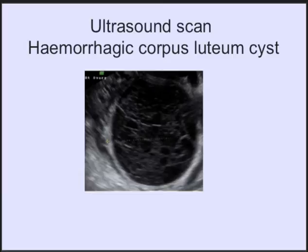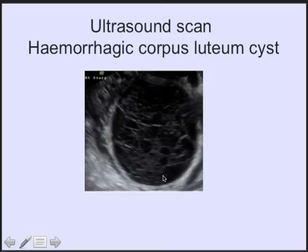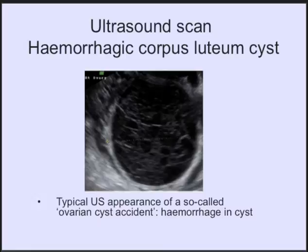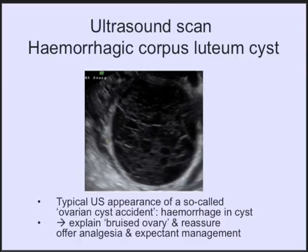Another example of a frequent cause for unilateral pelvic pain is a so-called ovarian cyst accident. We see an ultrasound scan with a somewhat reticular, cobweb-like appearance. This is a typical appearance of a fresh bleeding within an ovarian cyst after ovulation — called a hemorrhagic corpus luteum cyst. I usually refer to it as a bruised ovary; reassure the woman that it will take about 10 days for mother nature to recover, offer analgesia and expectant management. No need to admit her.